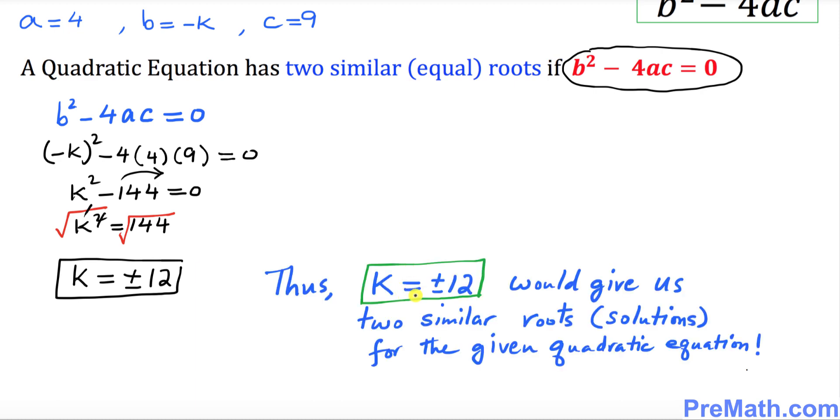So k equals plus or minus 12. Thus, k equals plus or minus 12 would give us two similar roots or solutions for the given quadratic equation. Thanks for watching and please subscribe to my channel for more exciting videos.